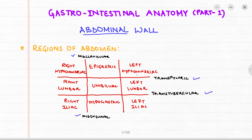The 9 quadrants are: the right and left hypochondriac, with the epigastric in between; the right and left lumbar in the middle, with the umbilical in between; and the right and left iliac, with the hypogastric in between.